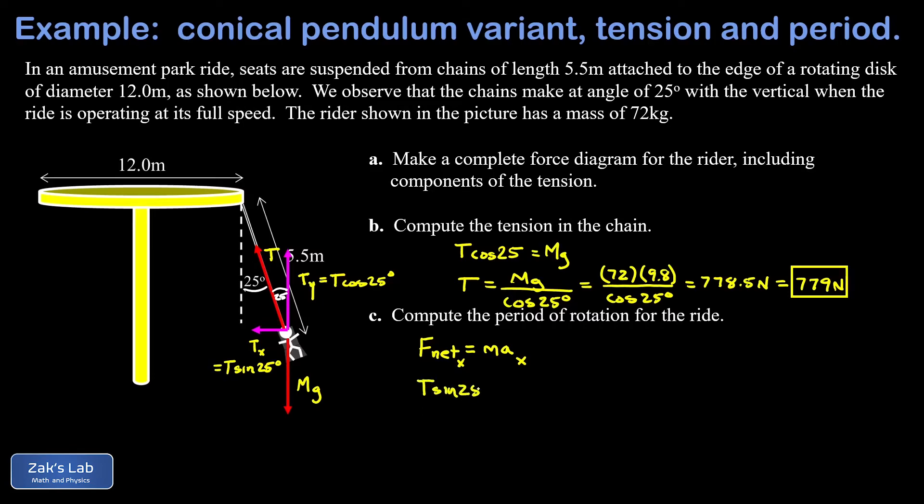What's the net force in the x direction? That's just T sine of 25. We already solved for T in part B, so we'll be able to plug that in when we need it. Then I have the mass of the rider, and then the acceleration of the rider. That's related to the period of rotation. I can write down the centripetal acceleration as 4 pi squared times r over the period squared.